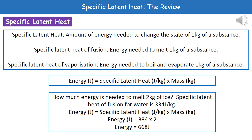On page two of your exam booklet you'll find the calculation: energy in joules equals specific latent heat in joules per kilogram times mass in kilograms. For example: how much energy is needed to melt two kilograms of ice? The specific latent heat of fusion for water is 334 joules per kilogram. So energy equals 334 times 2, giving us 668 joules.